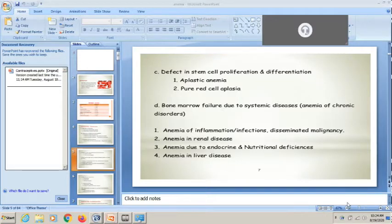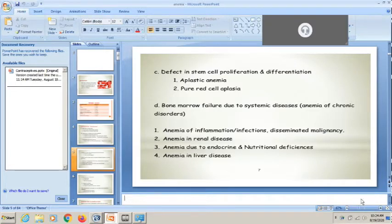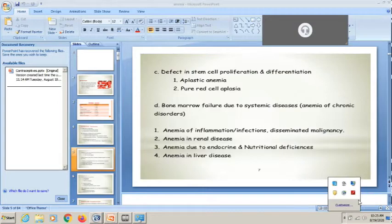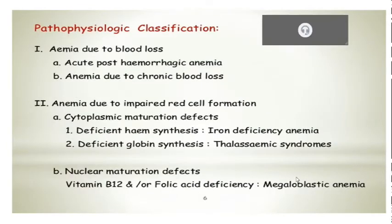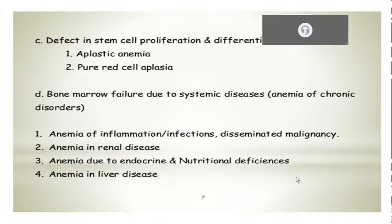Anyway, we'll get back to our topic. We're trying to classify anemia depending on the pathophysiology, and one of the causes can be blood loss. That is impaired red cell formation, then defect in the stem cell proliferation and differentiation, then there can be bone marrow failure.